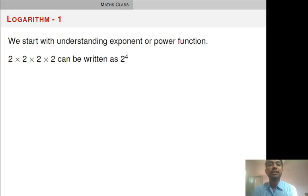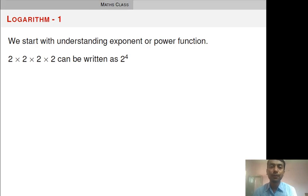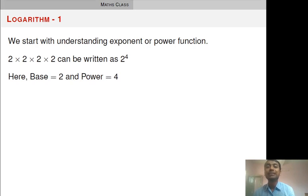We start with the understanding of exponent or power function. Whenever it is given 2 into 2 into 2 into 2 four times, we may write 2 raised to 4 in place of that expression. This is the short expression known as power function or exponent function. Here, 2 is the base of the function and 4 is the power of the function.